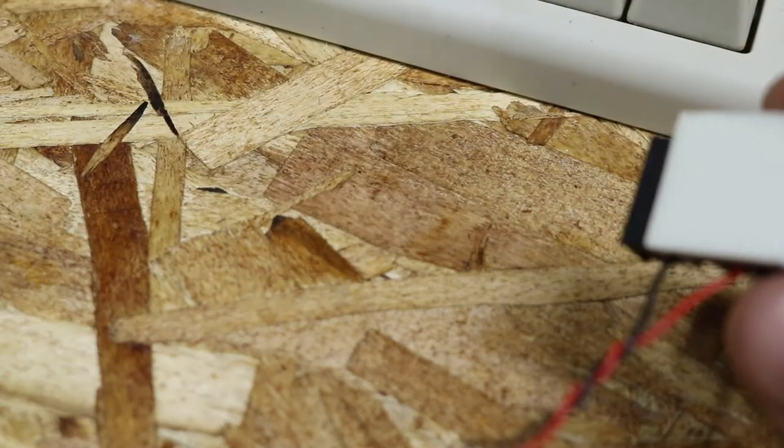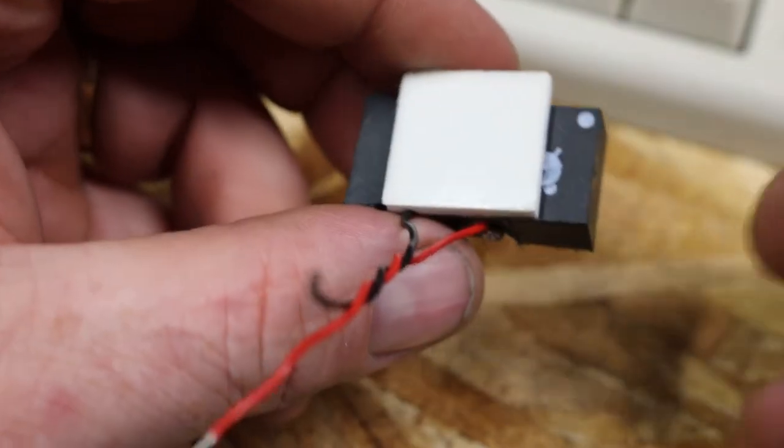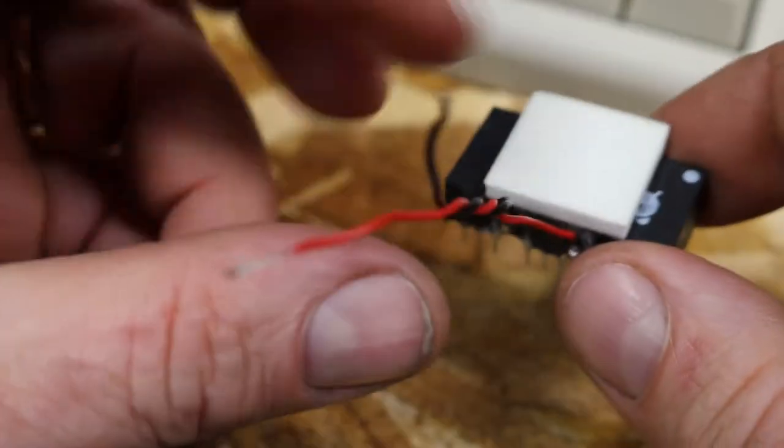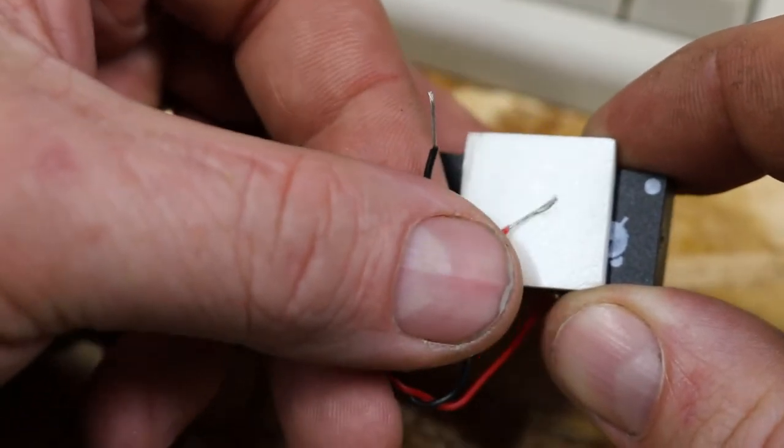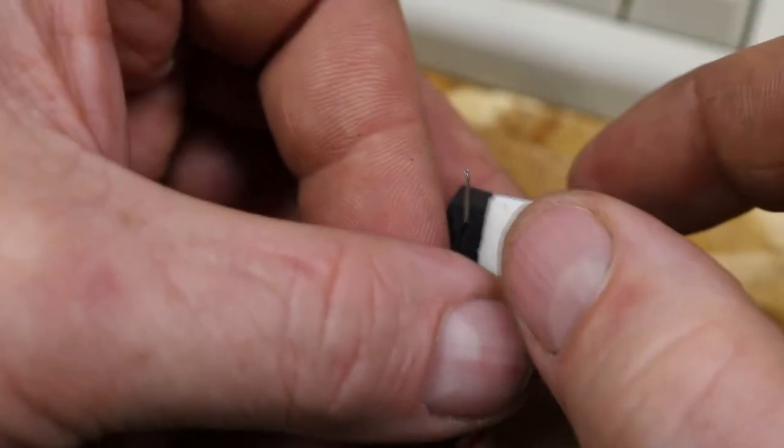So I'll peel that part off, and on the coin cell battery I'm gonna put the stripped enough wire back to where I can lay that on top of it. Just gotta hold it in place for now. Remember this is only a temporary fix, this is nothing permanent.